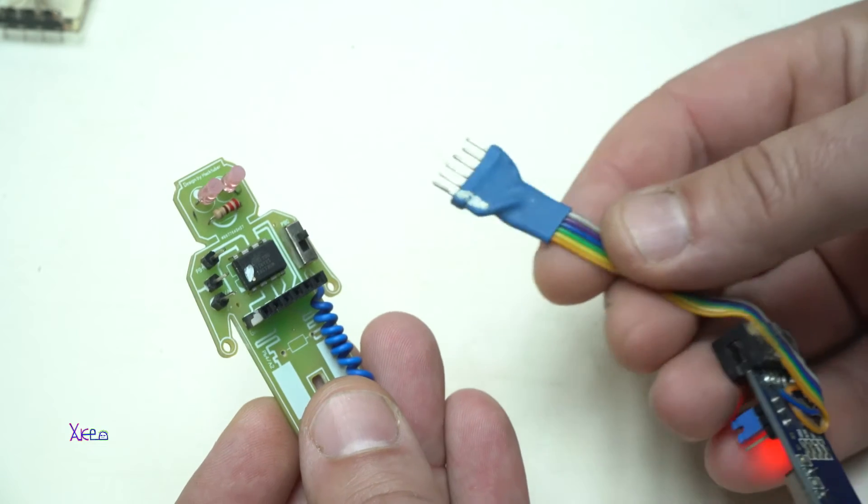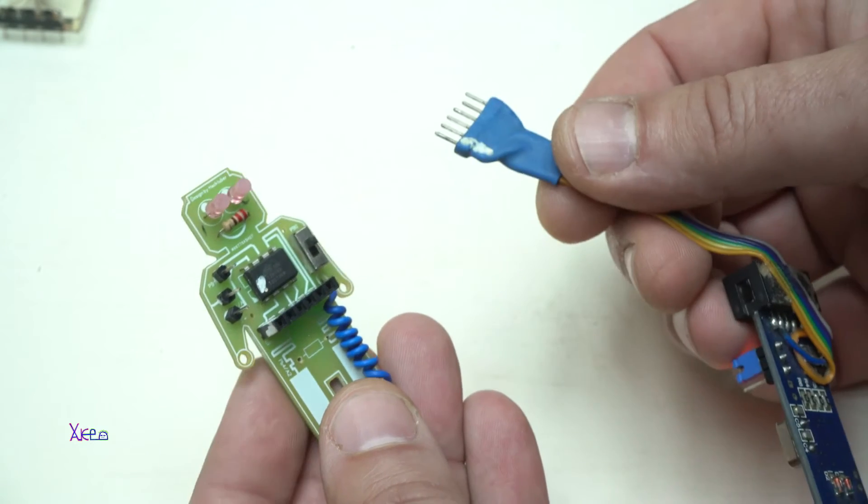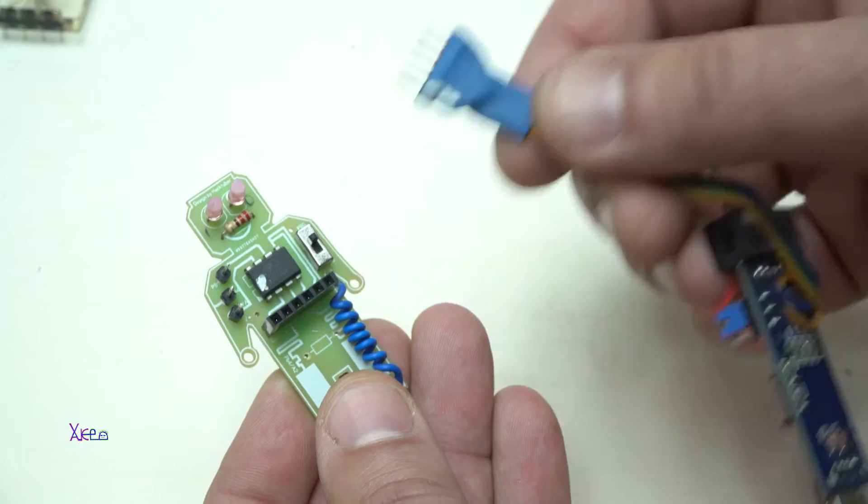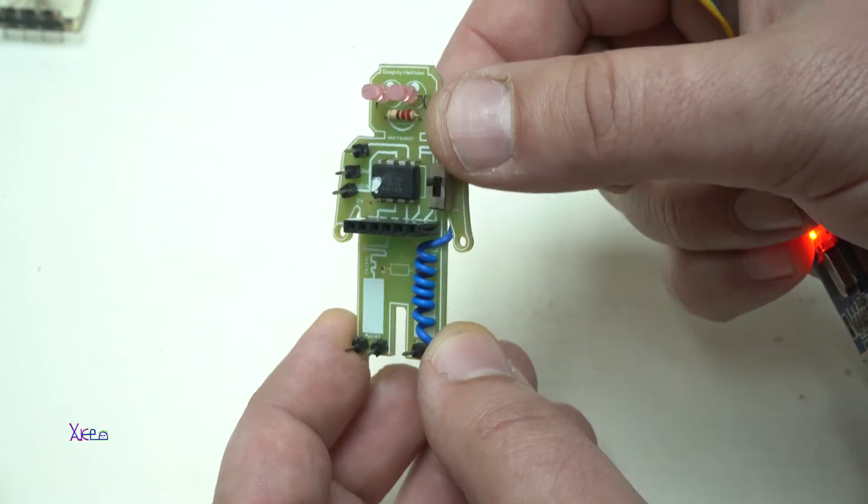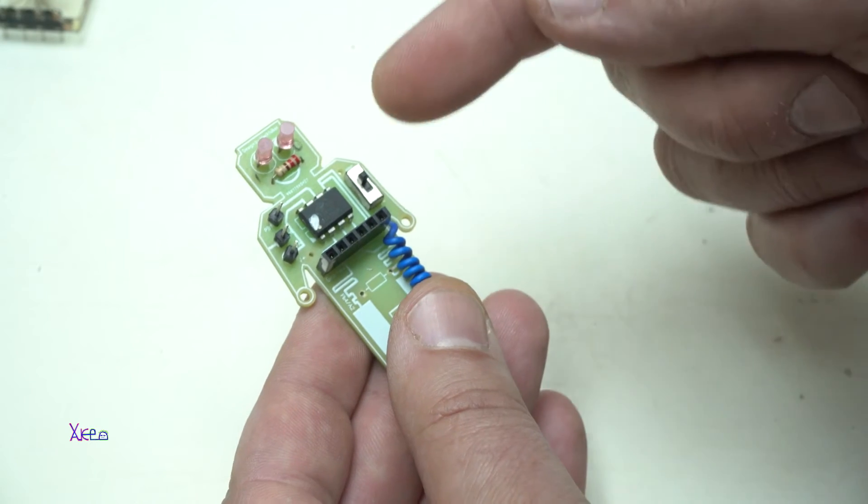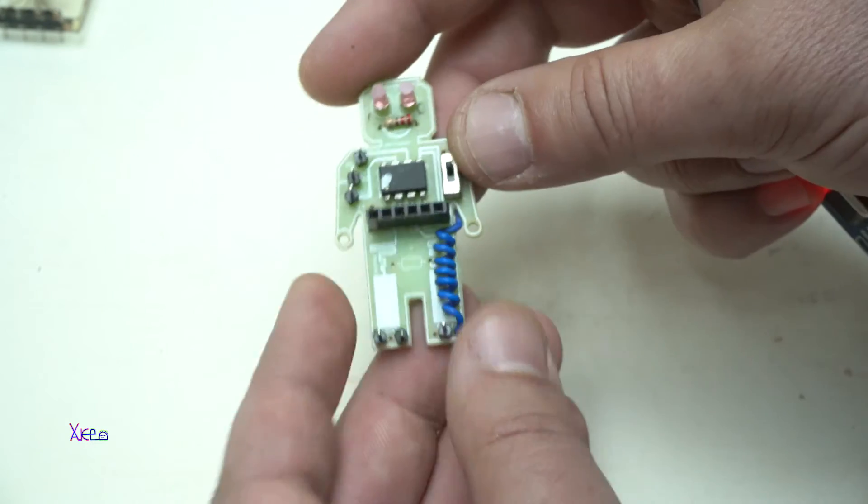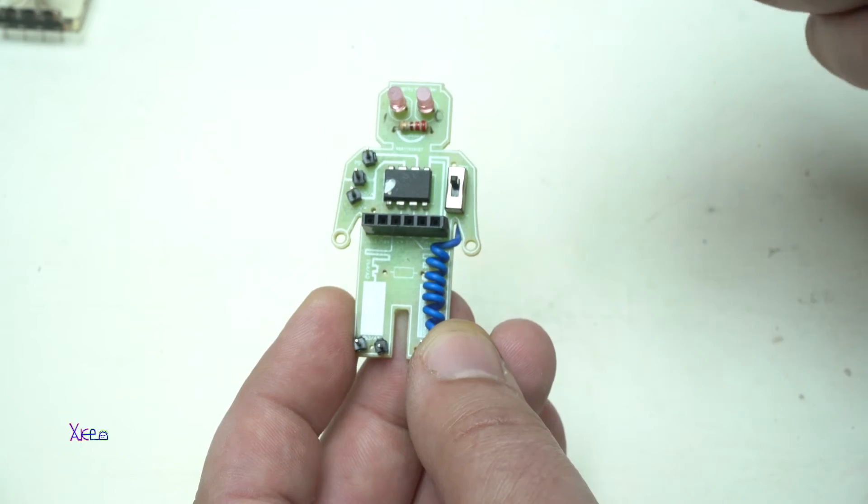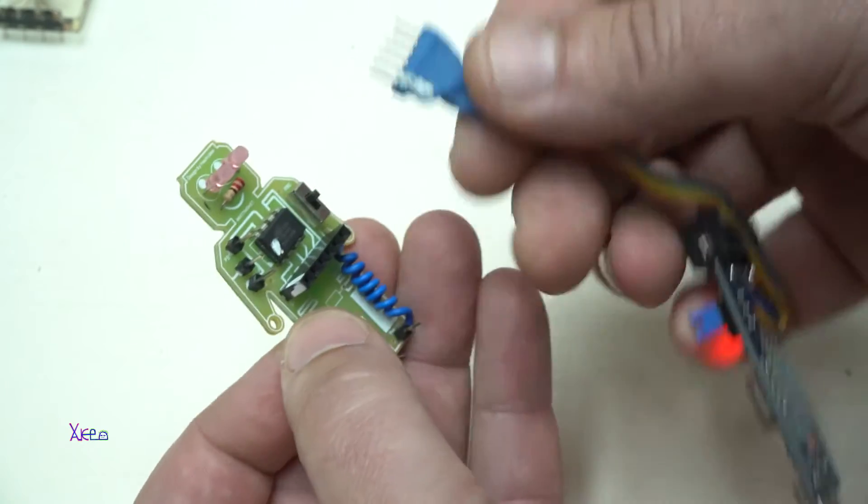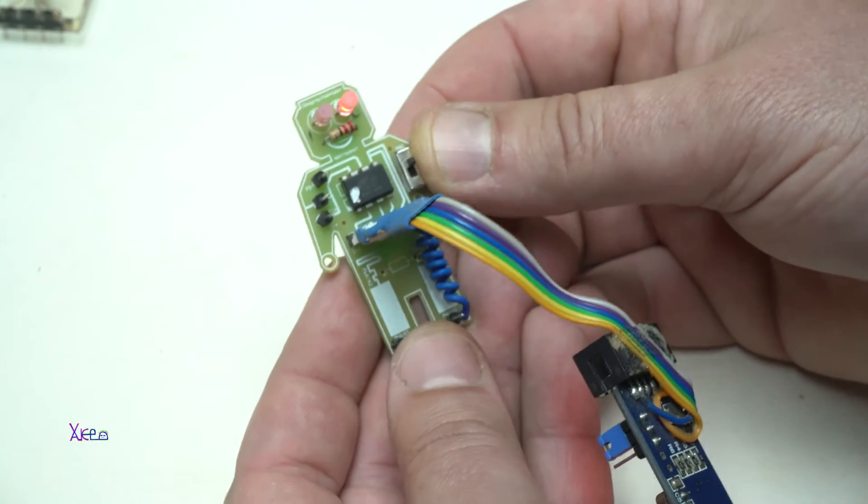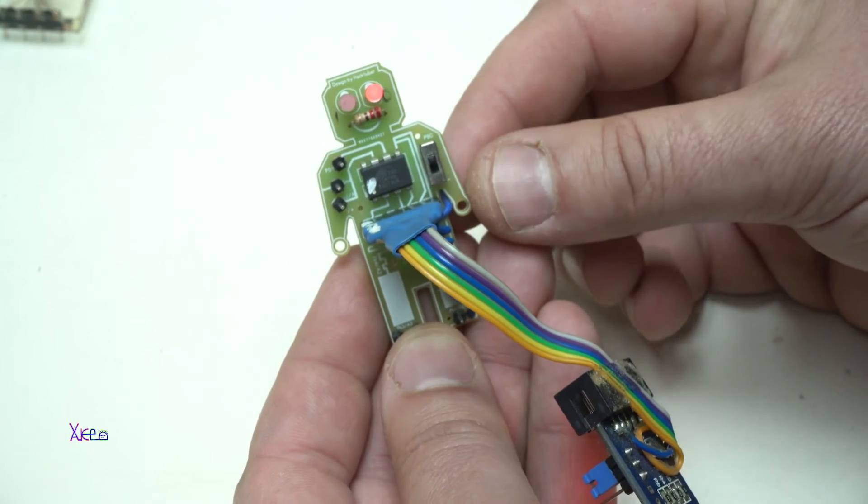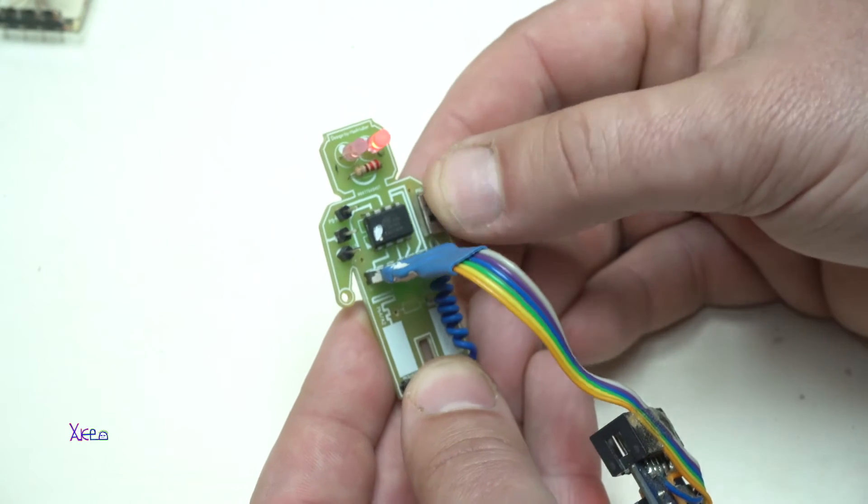Here I have a connector for programming and it's also for powering on the PCB board that looks like a Lego, which is nice. I have a full video how to make it, how to design it. Just check the link below this video. Powering on. And look, it's working. It's blinking. Nice.